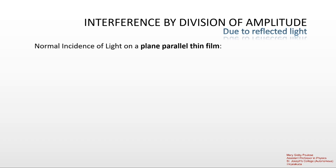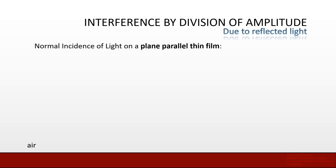Now let us consider what happens when light is incident normally on a plane parallel thin film — light falling exactly perpendicular to the film. A plane parallel thin film means its surface is plane and parallel. The film should be thin, in the range of micrometers. We consider the surrounding medium to be air, with the thin film having thickness t and refractive index mu.